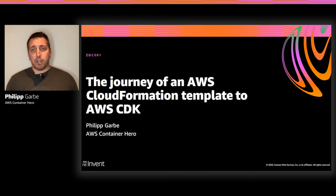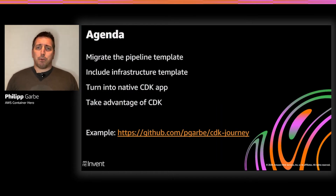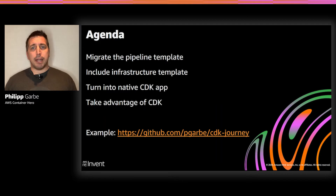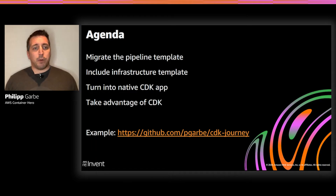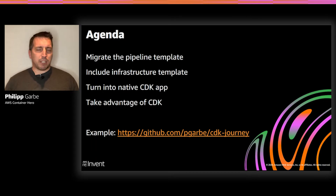You don't have to do it all at once — you can do that step by step. That means you don't have to invest too much time initially, but can still leverage the power of CDK. My example project is a simple Fargate service that runs behind a load balancer and Route 53, and it has a code pipeline to deploy it. I will first migrate the pipeline template, then include the infrastructure template until I can turn it into a native CDK application, and finally take advantage of the CDK. I want to show you the tools and practices as an example so that you can adopt them yourself, because every project is a bit different.